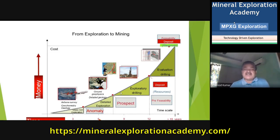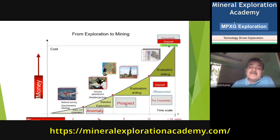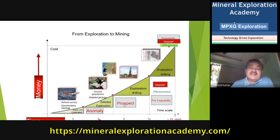Thereafter comes the prospect stage. Once we have located an area that gives some hint that a cluster of uranium anomalies is there and the possibility of finding uranium exists, that becomes our prospect. At this stage, all geological mapping, geological survey, trenching, pitting, and sampling are carried out.